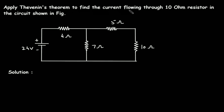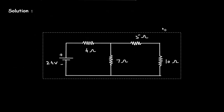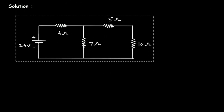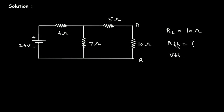Apply Thevenin's Theorem to find the current flowing through the 10 ohm resistor in the circuit shown. Let's say this is terminal A and this is terminal B. RL is equal to 10 ohm, and we have to find RTH and VTH. RTH is the Thevenin resistor and VTH is the Thevenin's voltage.